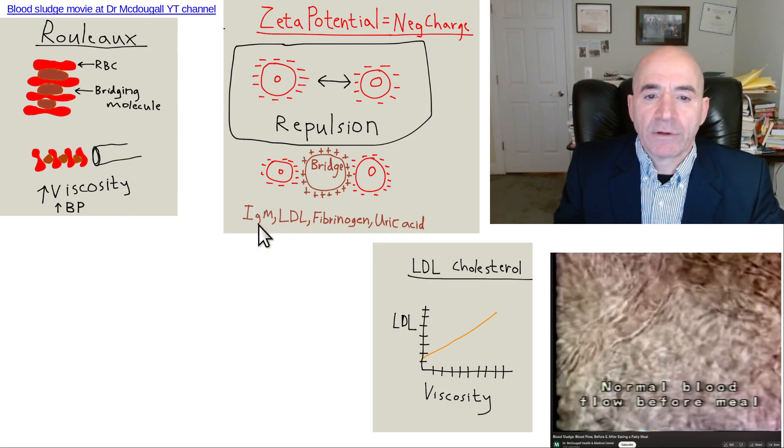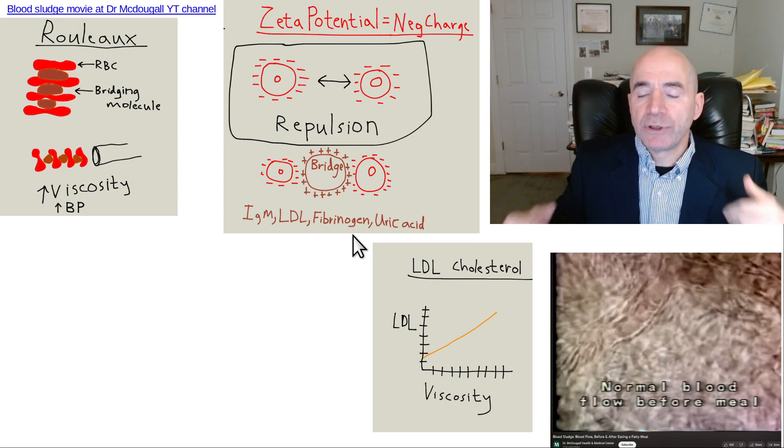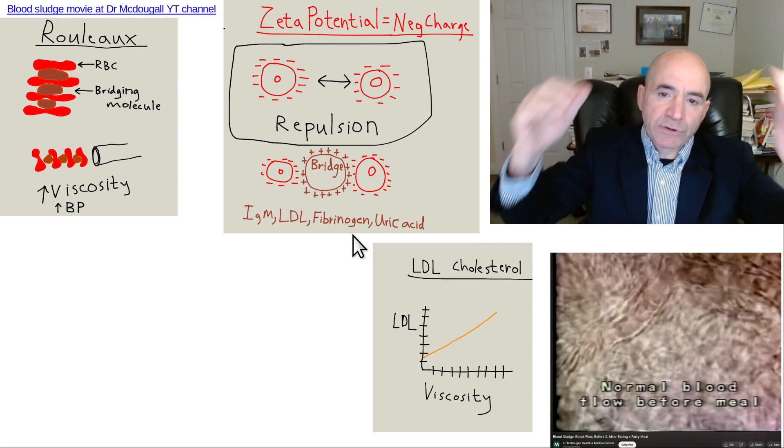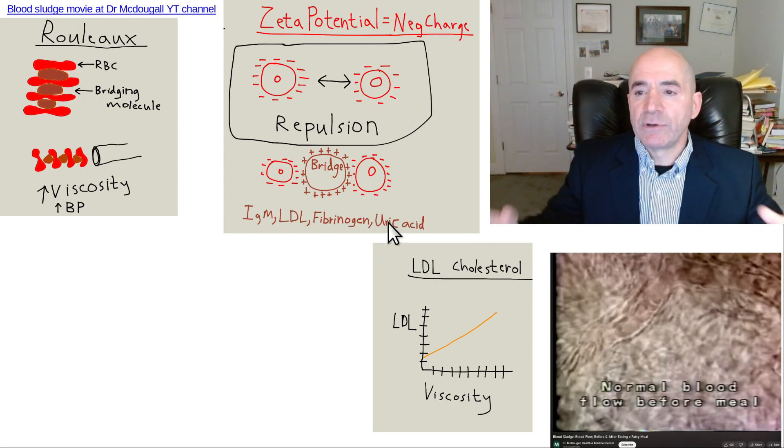Things that are bridging molecules are IgM antibodies with an acute infection, LDL cholesterol from high cholesterol, fibrinogen, a clotting protein, acute phase reactant, increased with stress, uric acid, increased with meat.